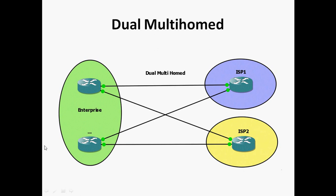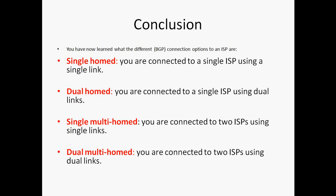This is a very good design. Here we can see two routers on the enterprise customer side, each connected to both ISP 1 and ISP 2. In the first router, it connects to ISP 1 as well as ISP 2; the second router also connects to ISP 1 as well as ISP 2. If one router goes down, we can still access ISP 1 and ISP 2 from the other router. This is a very good design for maximum redundancy.